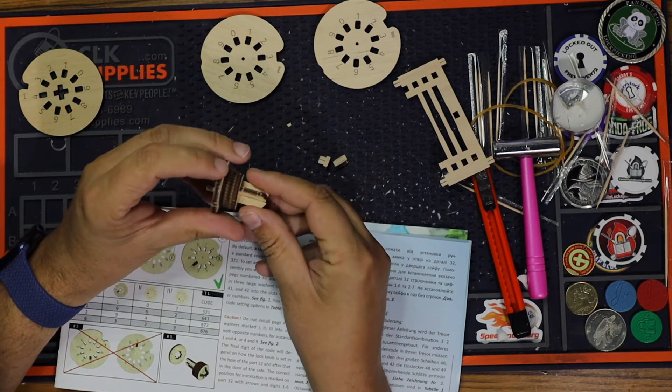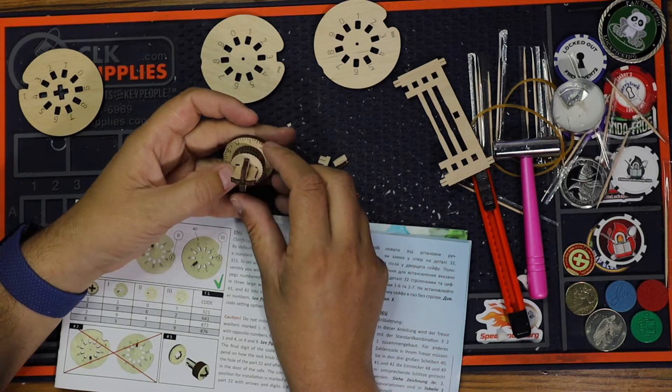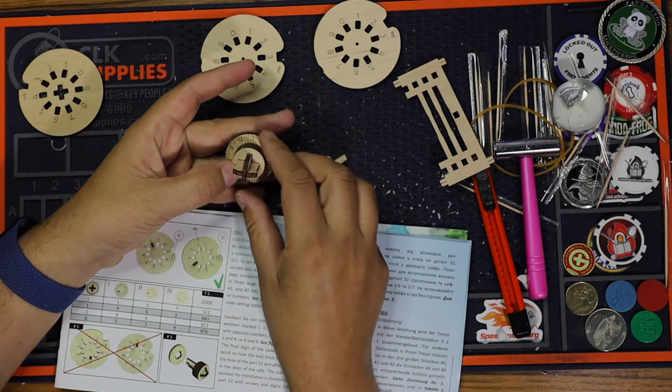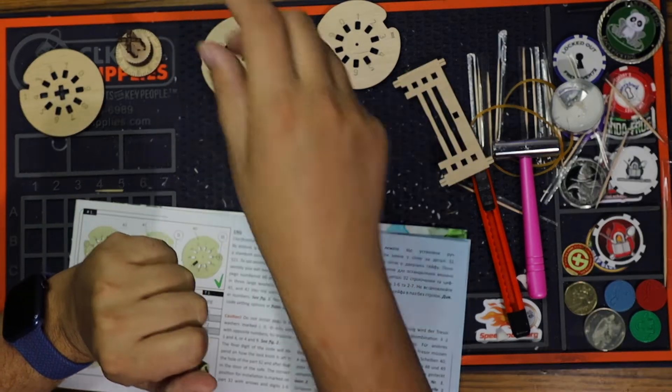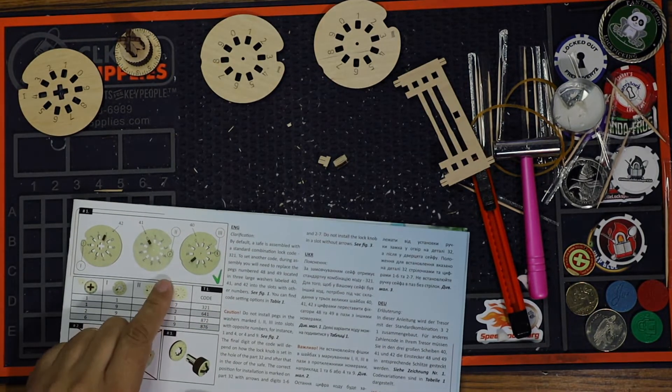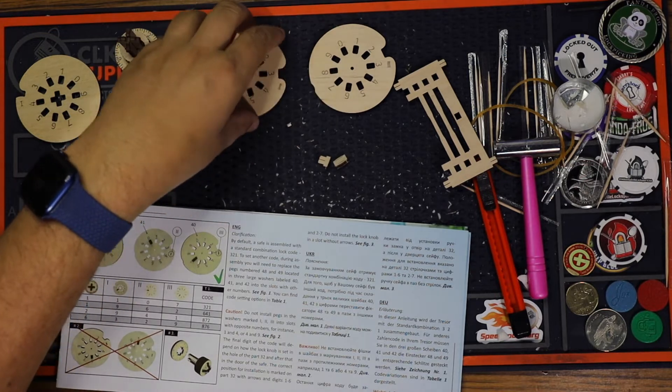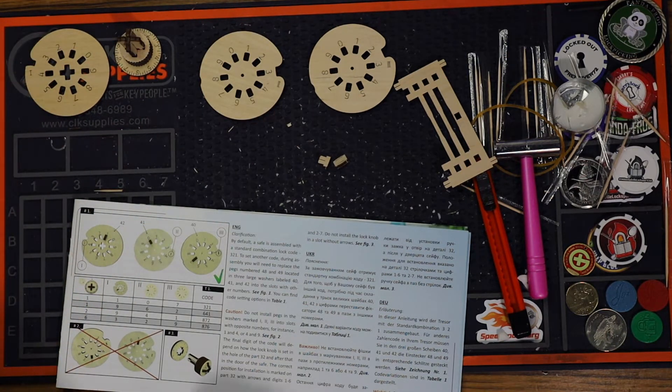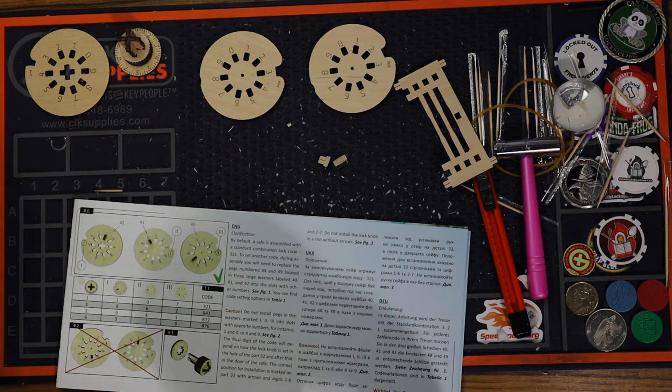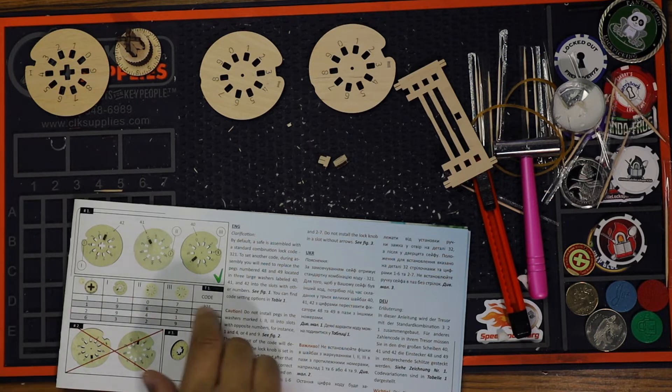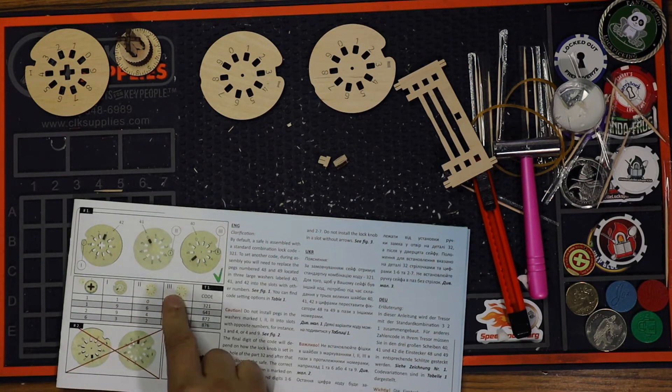We need to set it to one-six like this, and there was a clarification about this. All the safe assemblies are assembled with a standard combination lock code three-two-one. To set another code during assembly, we can see the figures here, but we'll keep it the easy way.